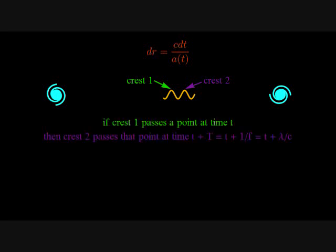Suppose crest 1 passes a point in space at time t. Then crest 2 passes that same point at a time t plus the period of the wave, which we symbolize by uppercase T.